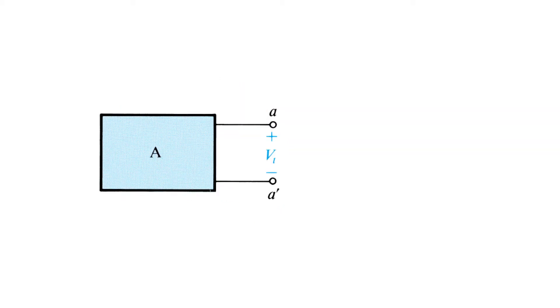In order to make this simplification, we need to find the voltage Vt and the impedance Zt. Thevenin's theorem tells us how.